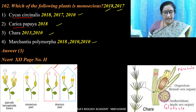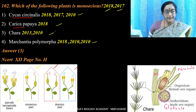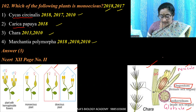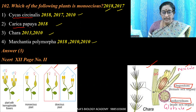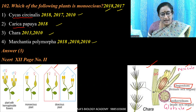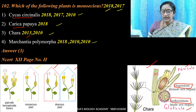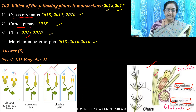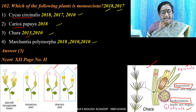Carica papaya has separate male and female plants, as does date palm — both are dioecious. In the case of Chara, both male and female reproductive structures are present on the same plant. This diagram shows Chara, where both male and female sex organs are present on the same plant. The female sex organ is the nucule and the male sex organ is the globule, also known as antherarium. In 2013, a question asked about this. Marchantia has separate male and female thalli — they are heterothallic.